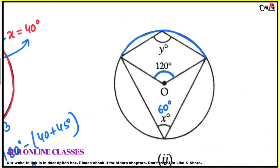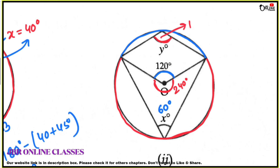The remaining arc has a central angle of 360 minus 120, which equals 240 degrees. Therefore Y equals half of 240, which equals 120 degrees. So Y equals 120 degrees.